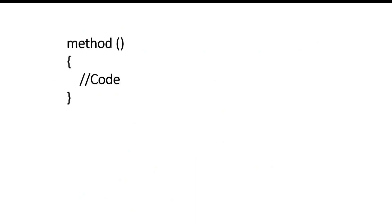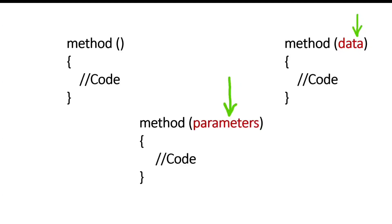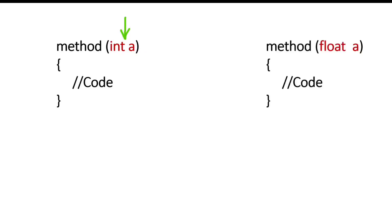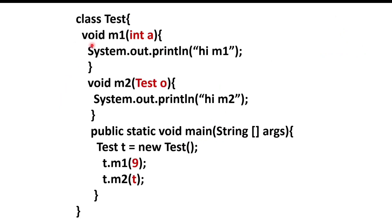In Java, a method is used to perform certain tasks. Sometimes to perform a task we need to pass data to the method, so that using that data the method can perform a particular task. We can pass data to the method in the form of parameters — integer type, float type. For example, here I have created an m1 method and passed an integer type parameter, so at the time of method calling I need to pass an integer value like 9.